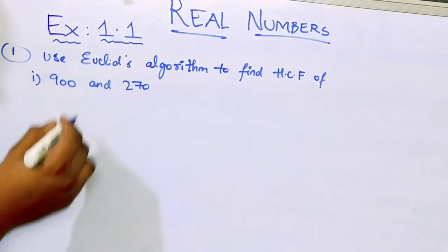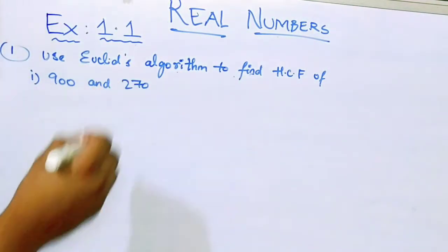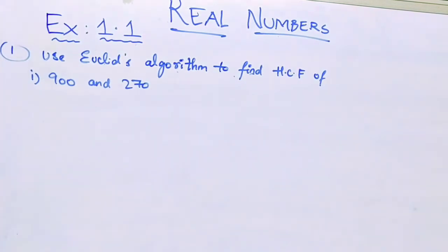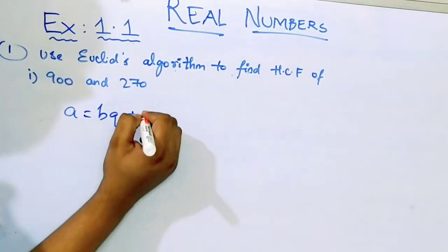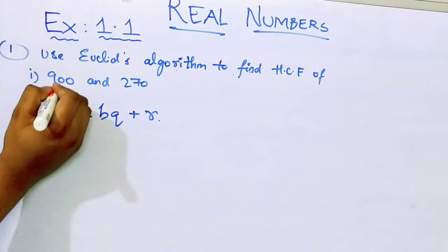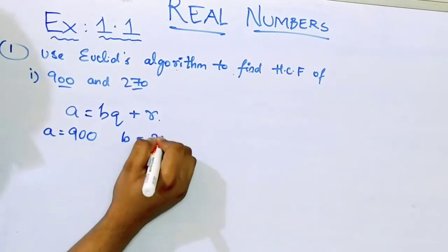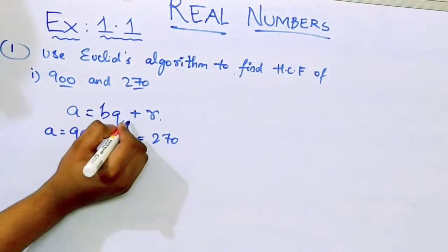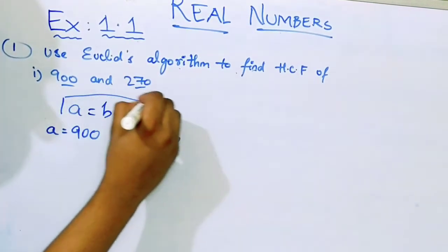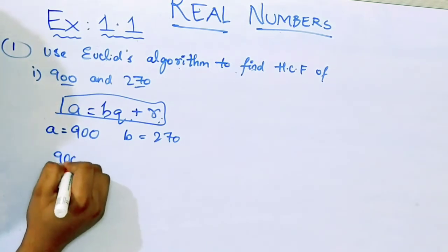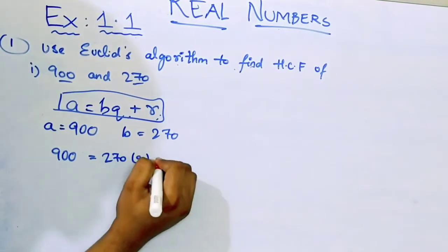Exercise 1.1, first question: use Euclid's algorithm to find the HCF of 900 and 270. Euclid's algorithm is A = BQ + R. We have A = 900 and B = 270, so we substitute into the equation: 900 = 270 × Q + R.